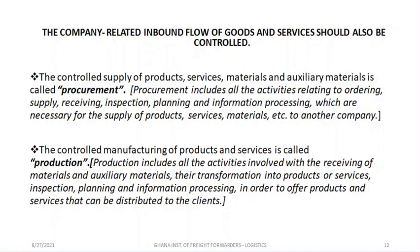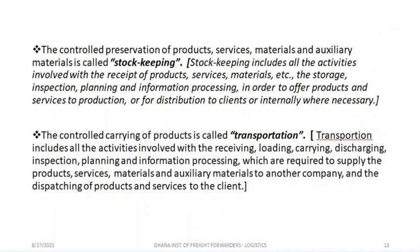We also have the controlled manufacturing of products and services, which is called production. Production processes include all the activities involved with the receiving of materials and auxiliary materials, their transformation into products or services, inspection, planning, and information processes — in order to offer products and services that can be distributed. Take note of the definition of production, and also take note of the definition of stock keeping.